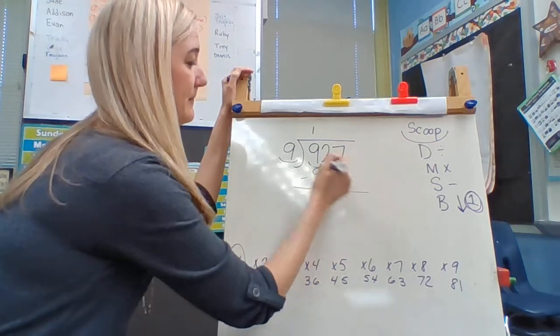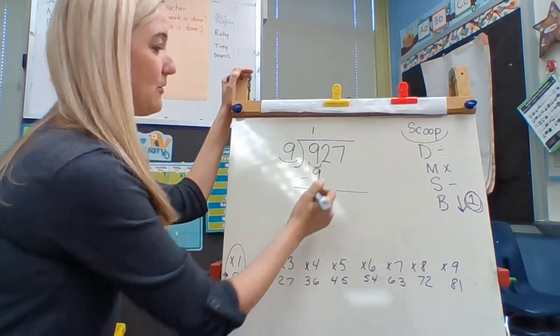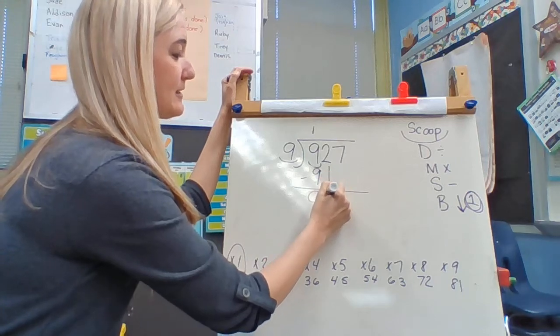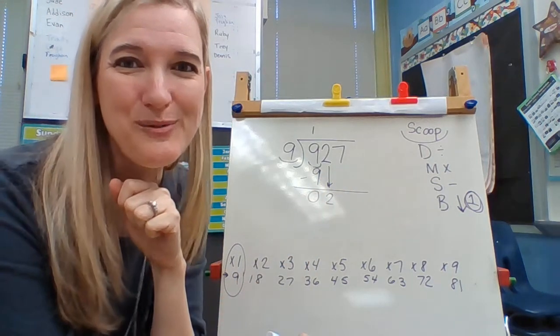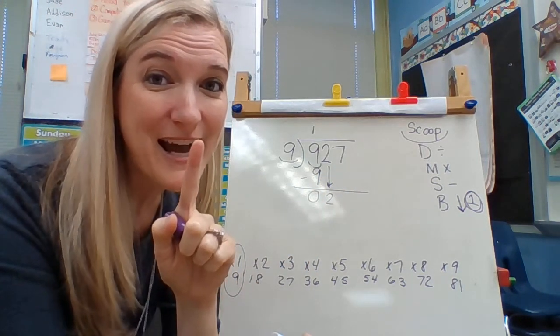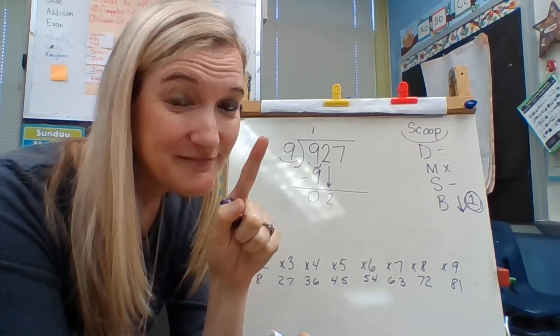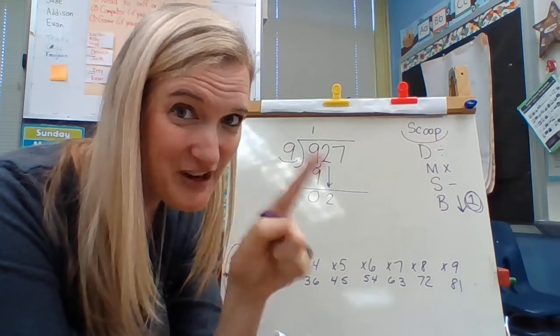Next thing I do is I subtract. 9 minus 9 is 0. I bring down my very next number. You can only bring down one number at a time. Just one. No more than one.